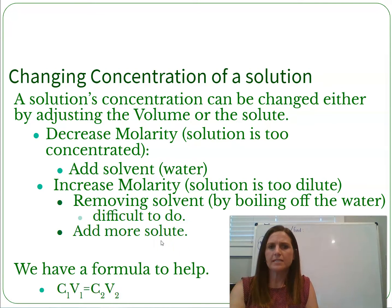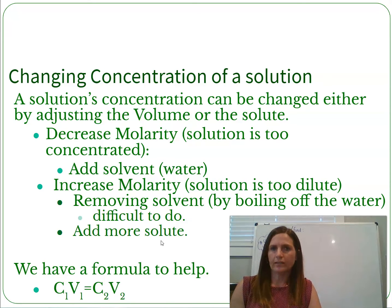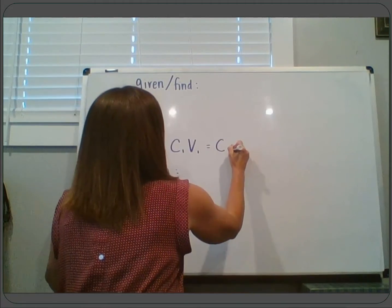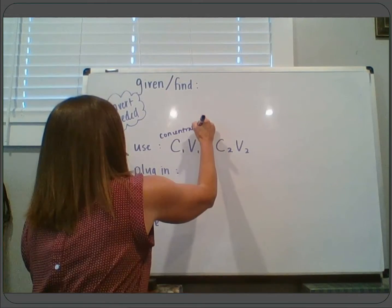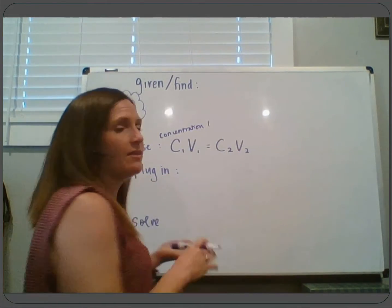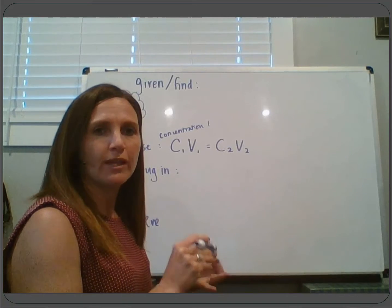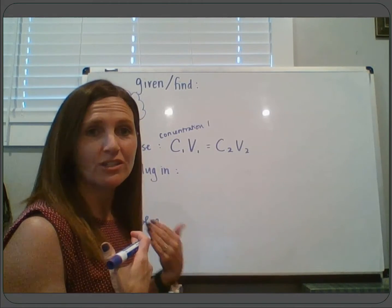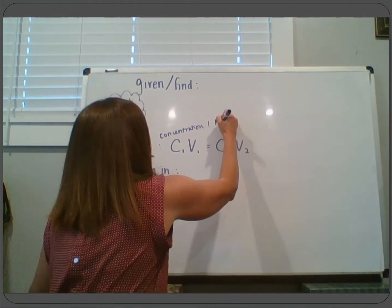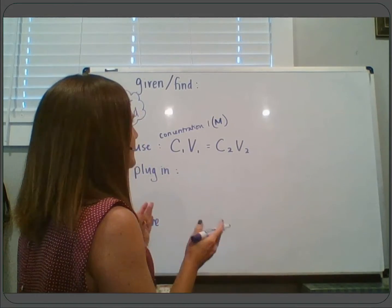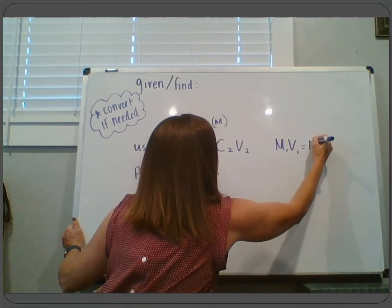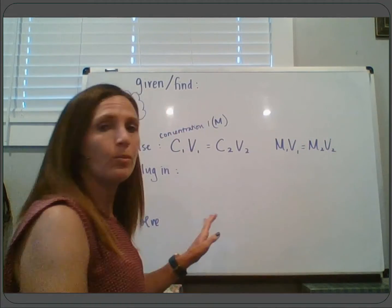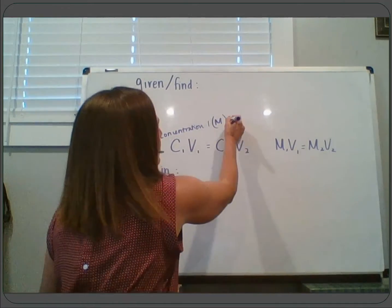There's a formula to help with this: C1V1 = C2V2. C stands for concentration — that could be in parts per million, molality, or molarity — and the only one we actually know is molarity. So we are always going to measure C1 and C2 in molarity. You may want to call it M1V1 = M2V2 if that helps, where M stands for molarity.